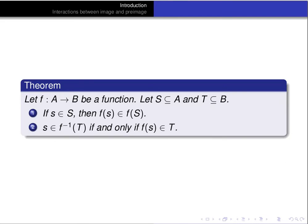We have a theorem proved in an earlier video that we're going to use in our proof below. This theorem states that if f is a function from A to B, S is a subset of A, and T is a subset of B, then two things hold. First, if little s is an element of the set S, then f(s) is an element of the image of S under f. Second, s is an element of the pre-image of T if and only if f(s) is an element of T. These statements follow immediately from the definitions of image and pre-image.